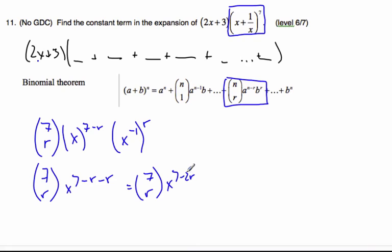I want my x term, as I discovered, to be an x to the 0 and an x to the minus 1. So let's set this exponent, 7 minus 2r, equal first to 0. Subtract the 7, negative 7, so r is equal to 7 over 2. This is impossible, r must be an integer.